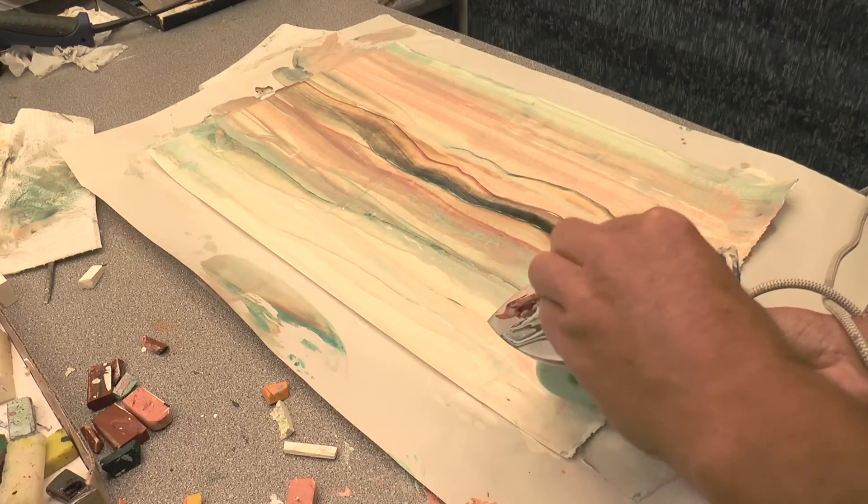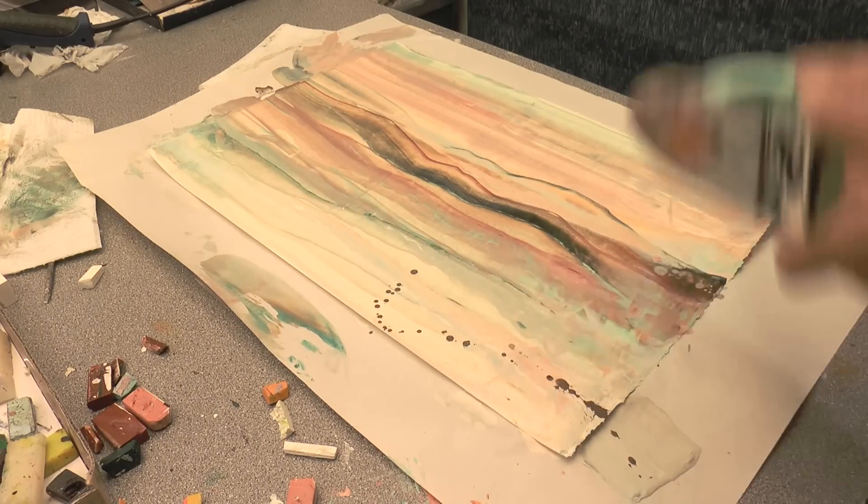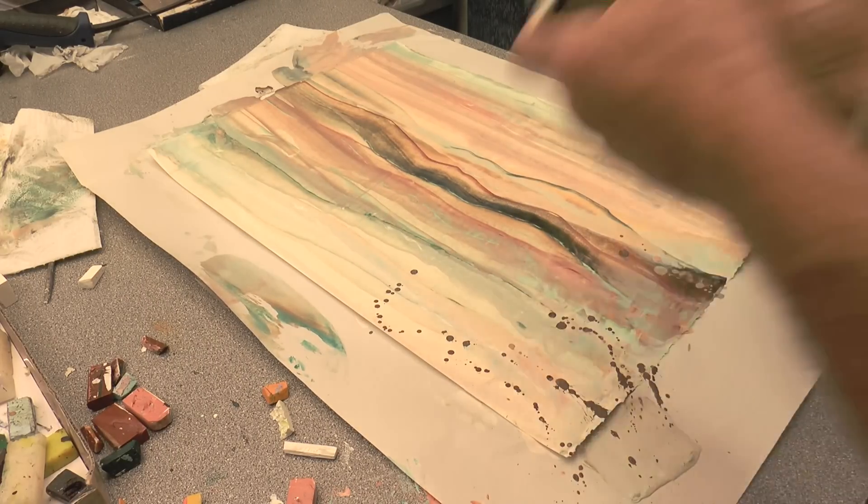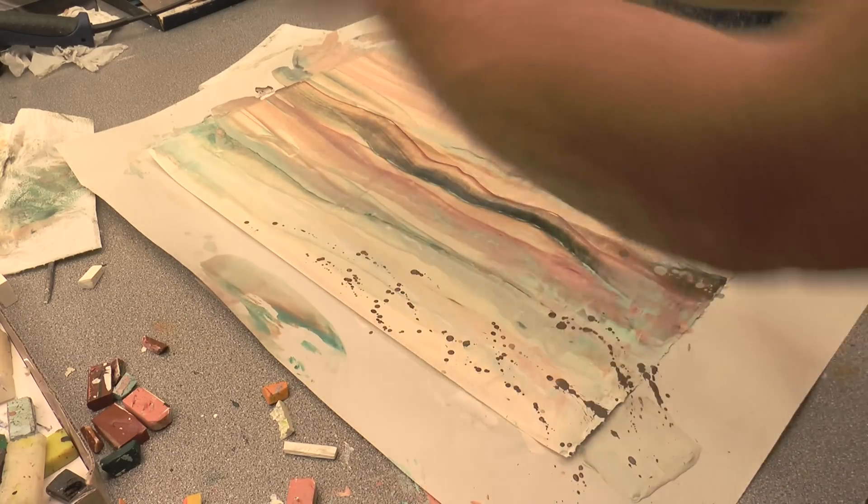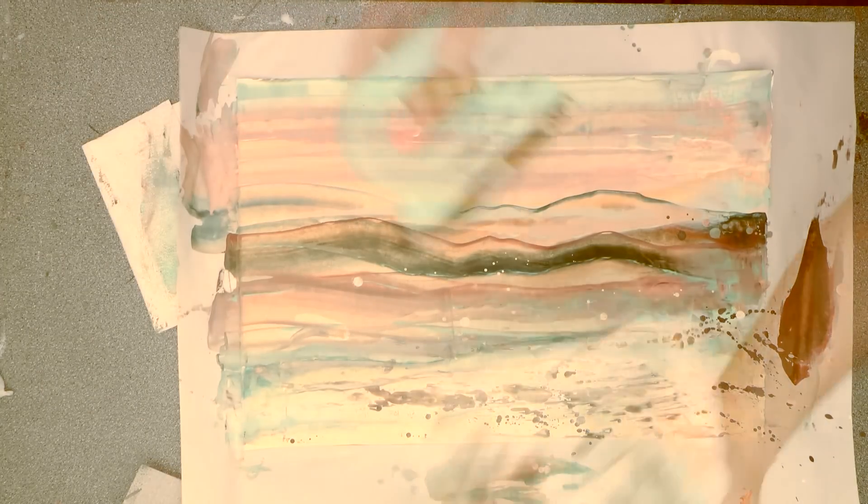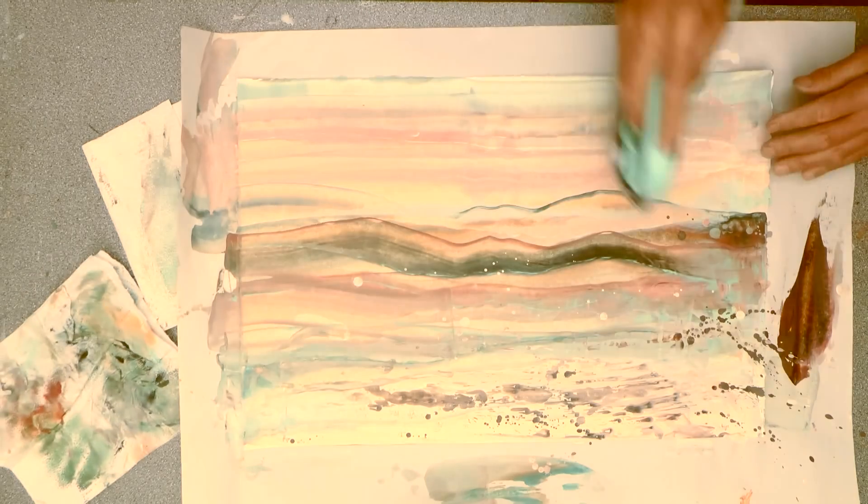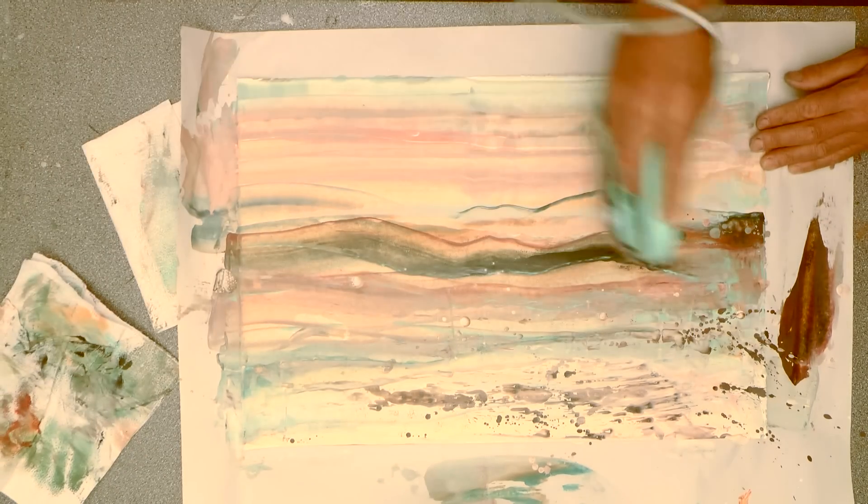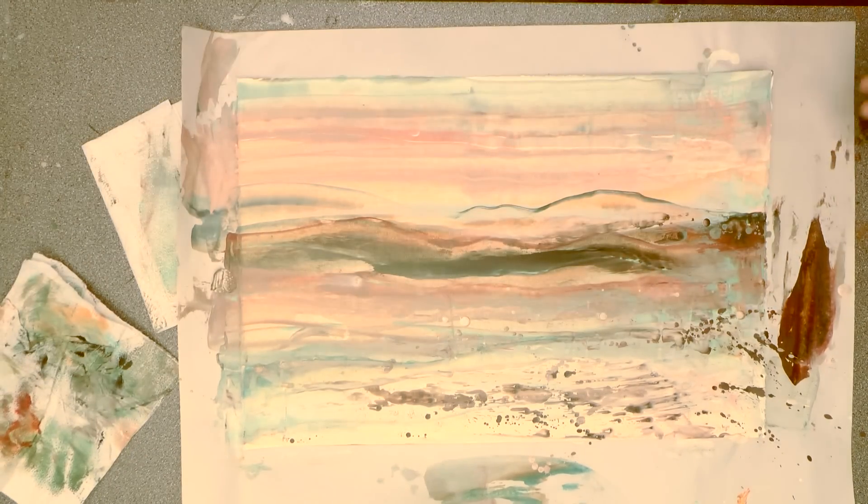I decided it needed some interest in the foreground, so flicking drips on with the iron like this is quite an effective and fast way of doing it. If you rattle the iron across them, cleaning it off and then going again, you can spread them out and create lots of information.